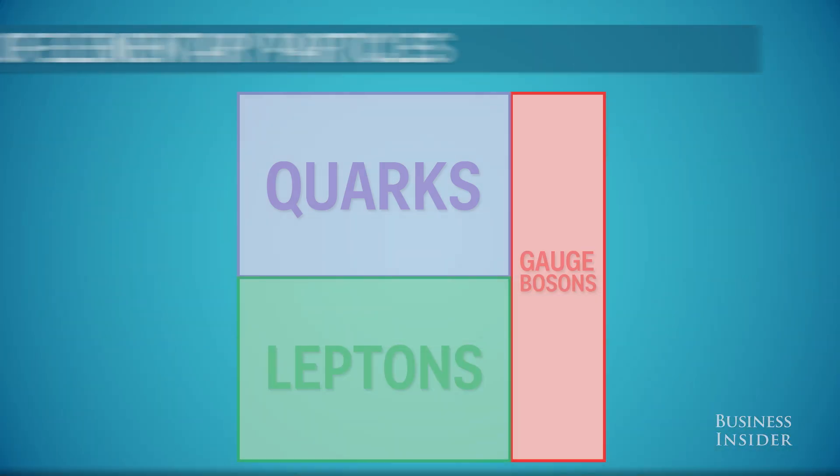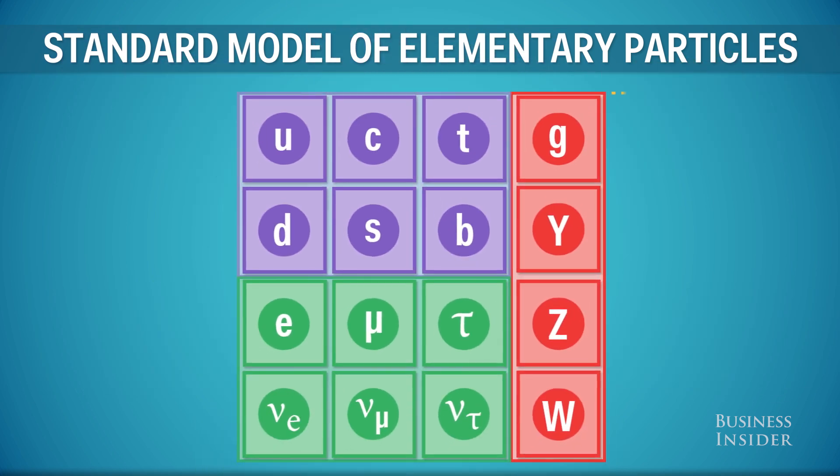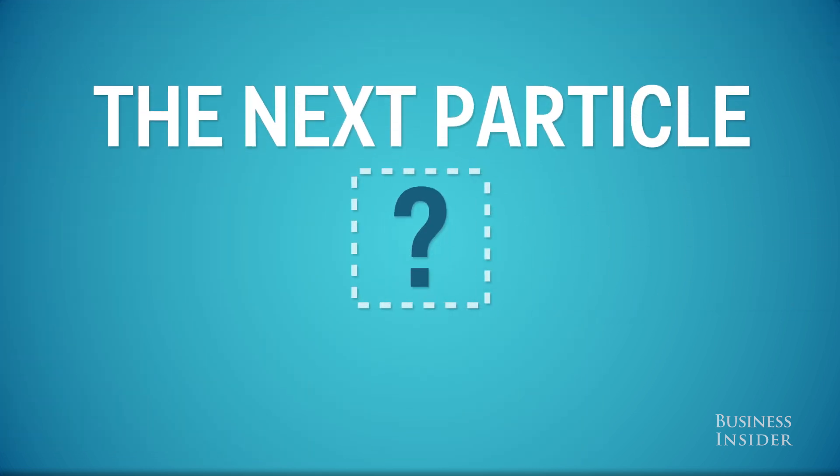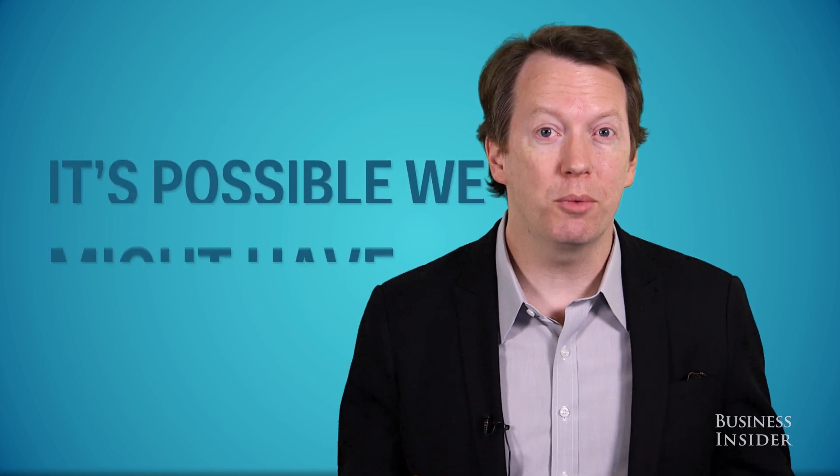The Higgs boson was the final piece of the standard model of particle physics. It was the final particle that we really thought should be there. But of course, most physicists want to find the next particle. We want to find the thing that we had not predicted would be there. So it's possible we might have done that.